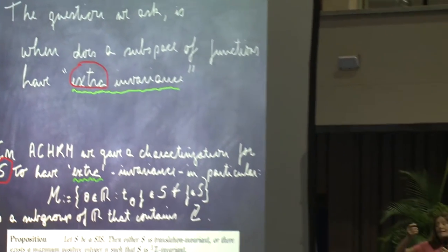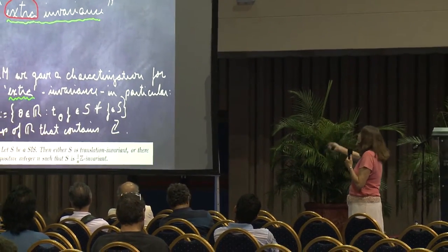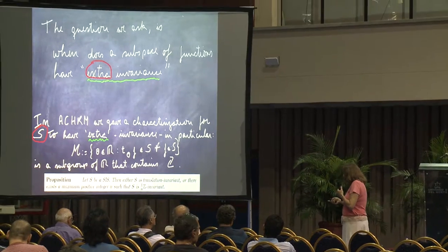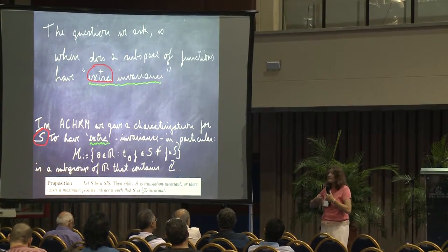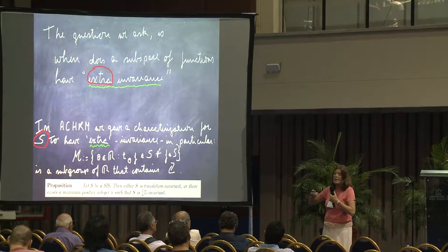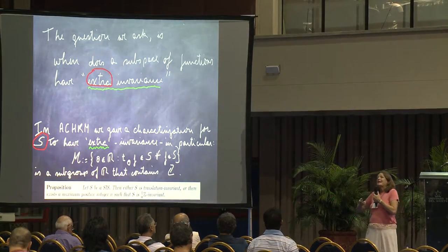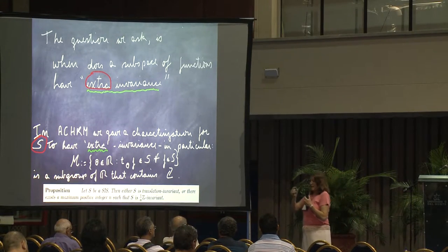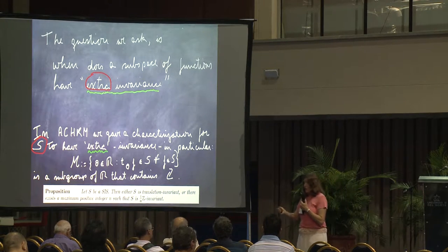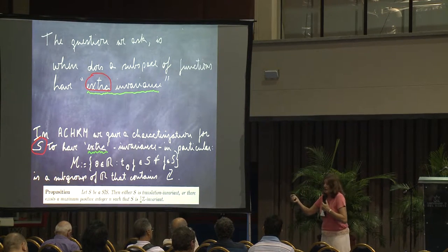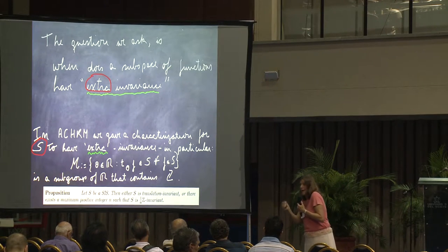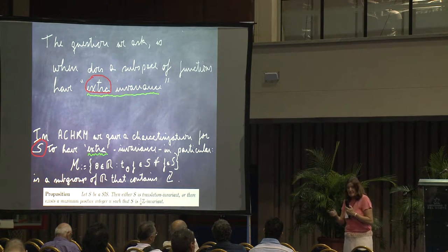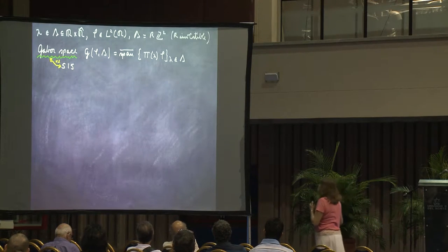The only search for some extra invariance is to find an n such that my space is (1/n)-invariant. Obviously, if it is (1/4)-invariant — meaning if you translate by a quarter, the function stays in the space — then it is also (1/2)-invariant because 1/2 = 2 × 1/4. So you are looking for the largest n for which it is (1/n)-invariant.